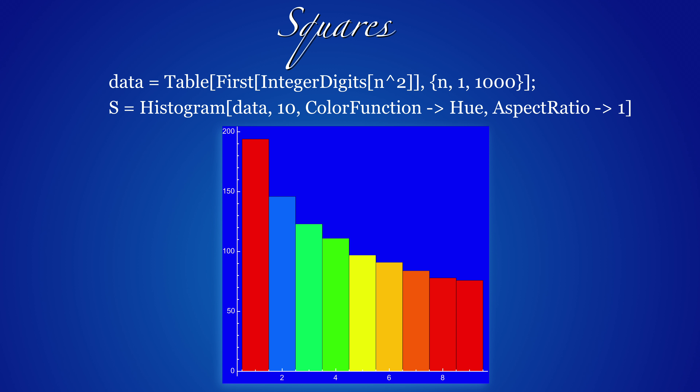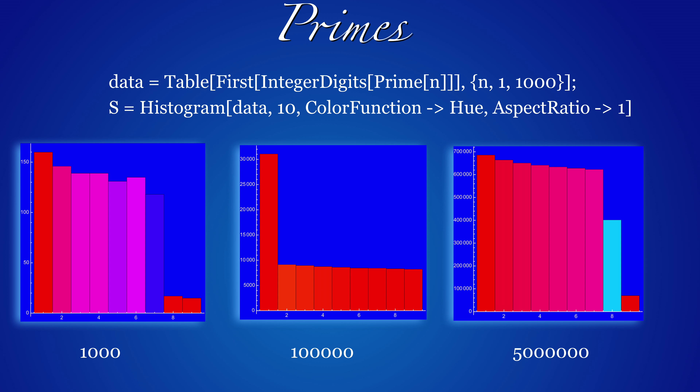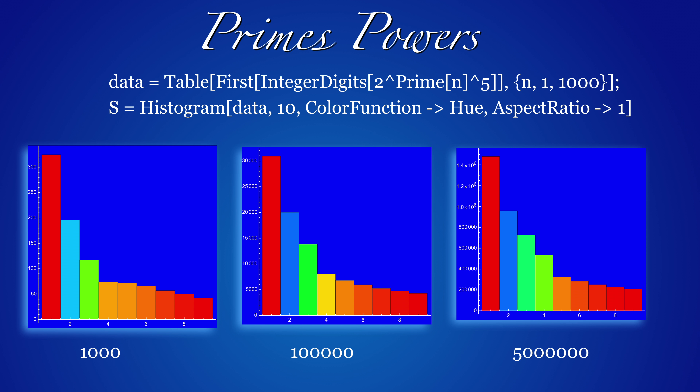How general is that law? For example, what happens if you replace powers of 2 with powers of pi or squares of numbers? We also did some experiments in class with primes. Can we explain this strange behavior? Obviously, there is no Benford law for primes.